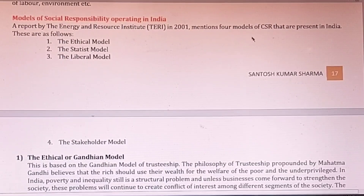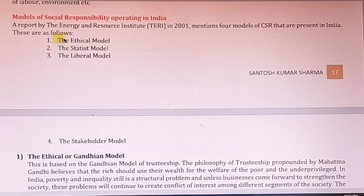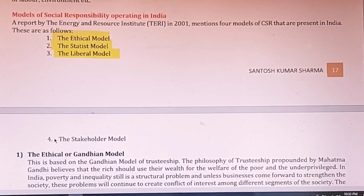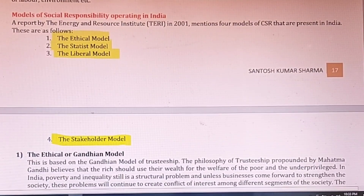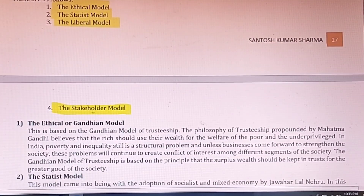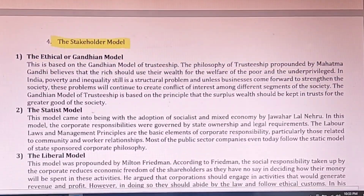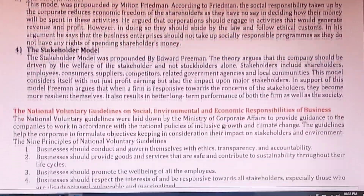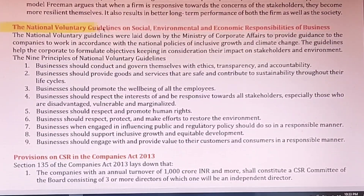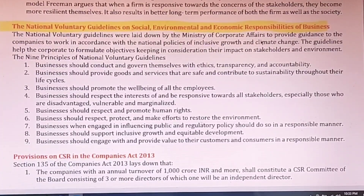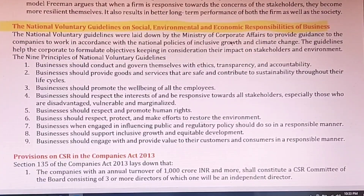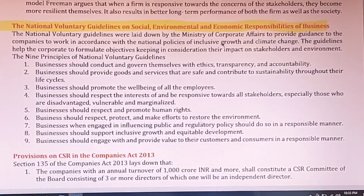There are four models of social responsibility in India: the ethical model, status model, liberal model, and stakeholders model. You can define all of these. There is also a short note possible on the National Voluntary Guidelines on Social, Environmental and Economic Responsibility of Business, which covers three main categories: society, environment, and economic development. The business company's responsibilities are described across these three categories.